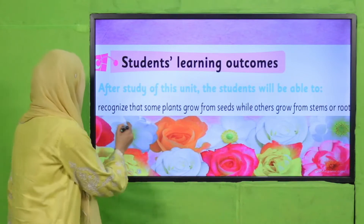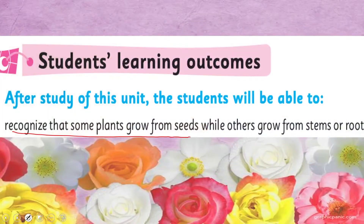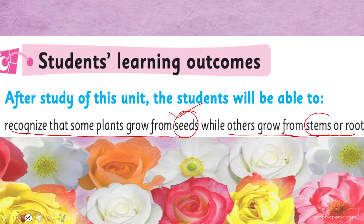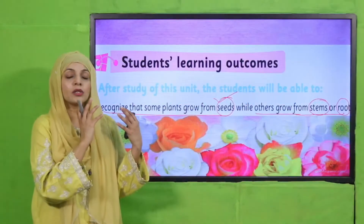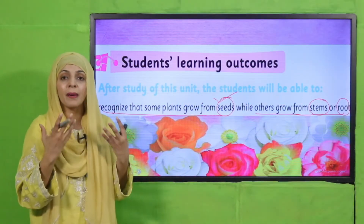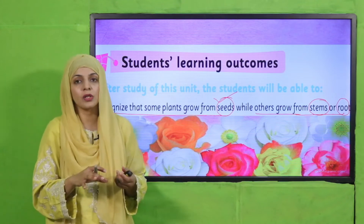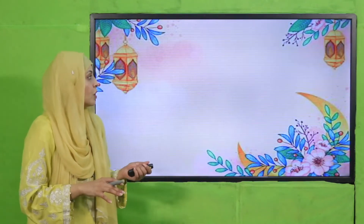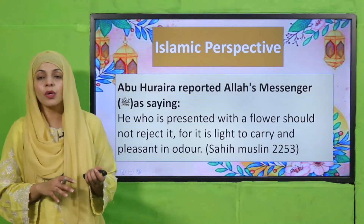In today's lecture, students will be able to recognize that some plants grow from seeds — which we have already covered — and today we are going to discuss plants that grow from other parts of the plant, like stem and roots. We will discuss how, besides seeds, new plants can also develop from other parts such as the stem and roots.